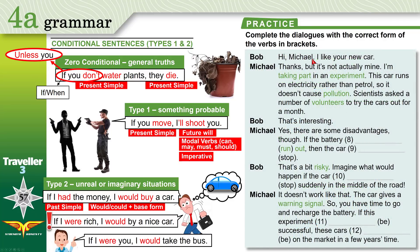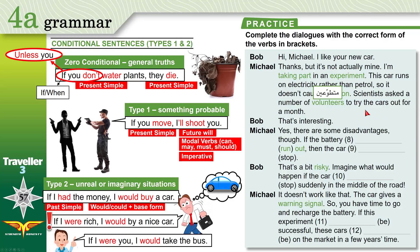'Hi Michael, I like your new car.' 'Thanks, but it's not actually mine. I'm taking part in an experiment' — participating in a scientific test. 'This car runs on electricity. It doesn't use petrol or gas, so it doesn't cause pollution.' Pollution is like carbon monoxide in the air. 'Scientists asked a number of volunteers' — people who work for free — 'to try the cars out for a month.'